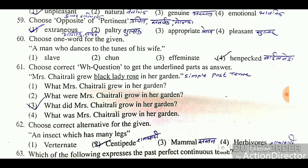Question: Choose the correct WH question to get the underlined part as the answer. 'Mrs. Jayetrali grew black lady rose in her garden.' This is a simple past tense sentence. The underlined part is the object. The correct WH question formed for the underlined answer is: 'What did Mrs. Jayetrali grow in her garden?'